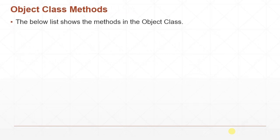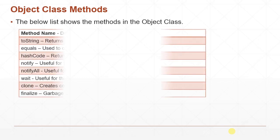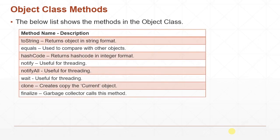The following list shows the methods in the Object class: toString, equals, hashCode, notify, notifyAll, wait, clone, and finalize.